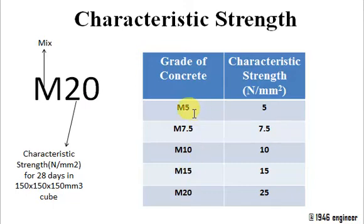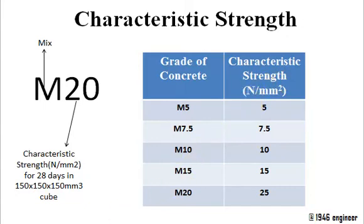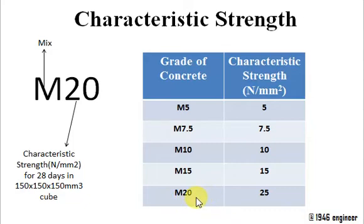It is easy to remember the characteristic strength of particular grades of concrete. M10 represents 10 Newton per mm² characteristic strength, and similarly M15 represents 15 Newton per mm² characteristic strength.